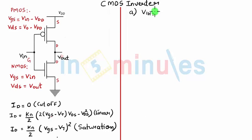While doing that we saw that when the input is equal to VIH, the NMOS transistor operates in linear region and the PMOS transistor operates in saturation region. We have already seen this in the previous clips.